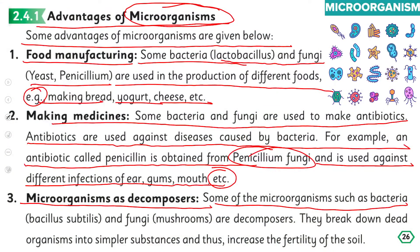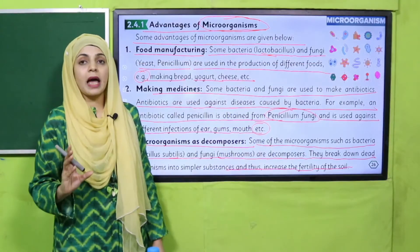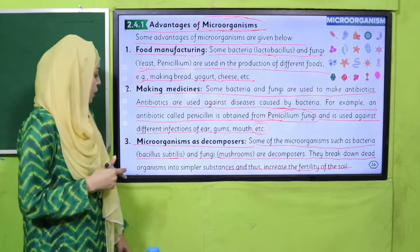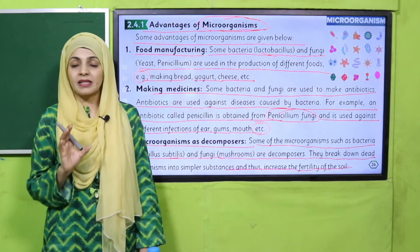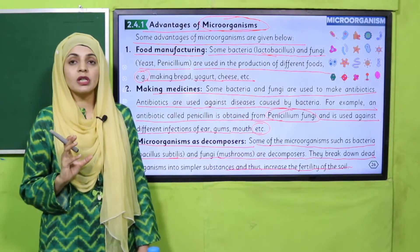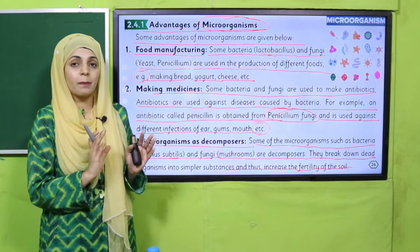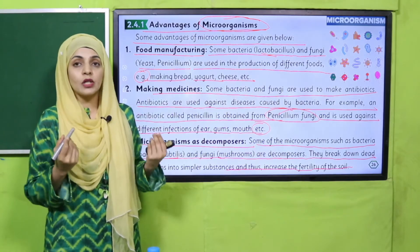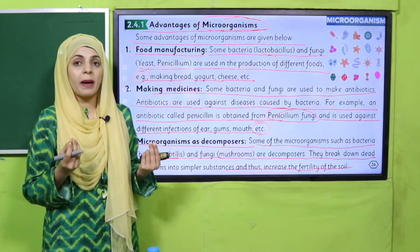Microorganisms are also used as decomposers. Some microorganisms, such as bacteria Bacillus subtilis and fungi like mushrooms, are decomposers. They break down dead organisms into simpler substances and thus increase the fertility of soil by turning dead organic matter into nutrients.